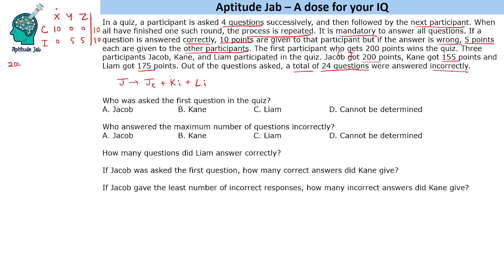Let us find the total points: 200 plus 155 plus 175 equals 530 points. That means there are 53 questions in the quiz. Since 24 were answered incorrectly, 29 must be correct and 24 must be incorrect.